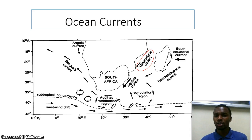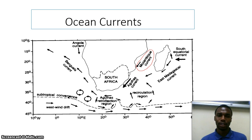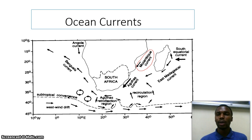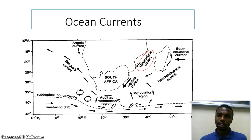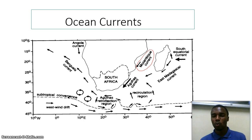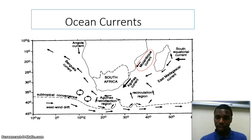Moving on to ocean currents. Over Southern Africa, we have the Benguela current on the left, and we also have what we call the Agulhas current. I need to emphasize that researchers debate whether there is a Mozambique current, because some researchers say there are large circular eddies over that region. So there is still a debate whether it is a Mozambique current or whether we have large circular eddies over the Mozambique Channel.